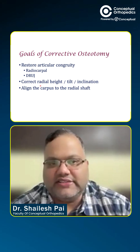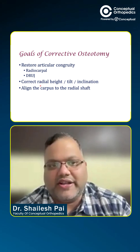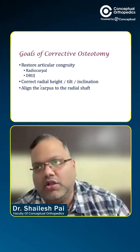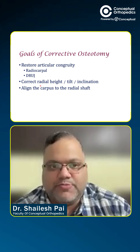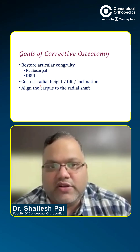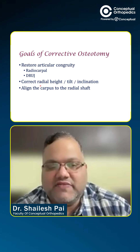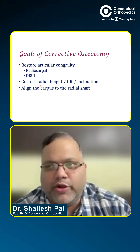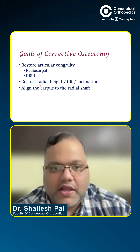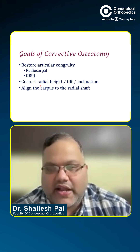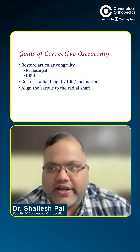So what are the goals if we are considering surgery? The goals of corrective osteotomy are, of course, to restore articular congruity — that means getting back to all the anatomical radiological parameters. We need to address articular congruity of both the radiocarpal as well as the radioulnar joint, and effectively get back to normal. This includes correcting the radial height, tilt, inclination, and aligning the carpus to the radius shaft.